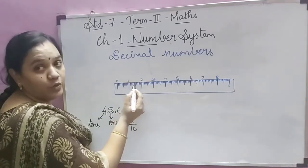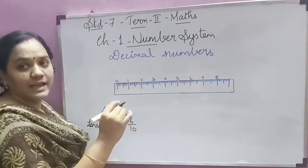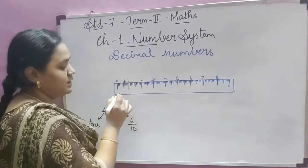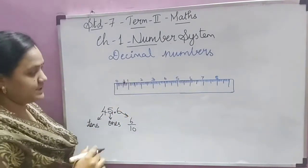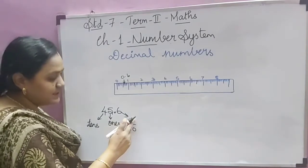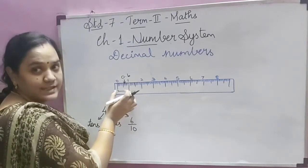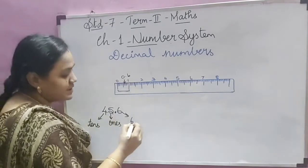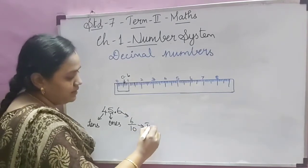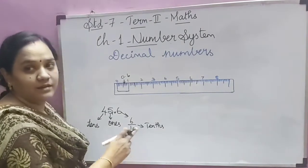Then 0.9, 1, 1.1, 1.2, 1.3 — you learned this in previous classes while drawing segments and measuring. So 0.6 comes here, after 0.5. We are mentioning it using 6 by 10, the 10th part. The whole is 10 and our number is 6, so 6/10 is the place value. We call this the tenths place — T-E-N-T-H-S.